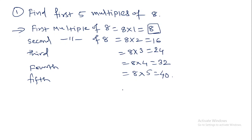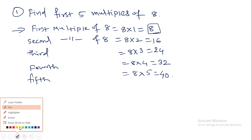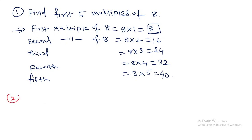Only remember: to find out specific multiples, you have to multiply by that specific number only. Suppose this question is given to us: Find the twelfth multiple of eleven. Here, a specific multiple is asked. Which specific? The twelfth multiple. Of which number? The number eleven.